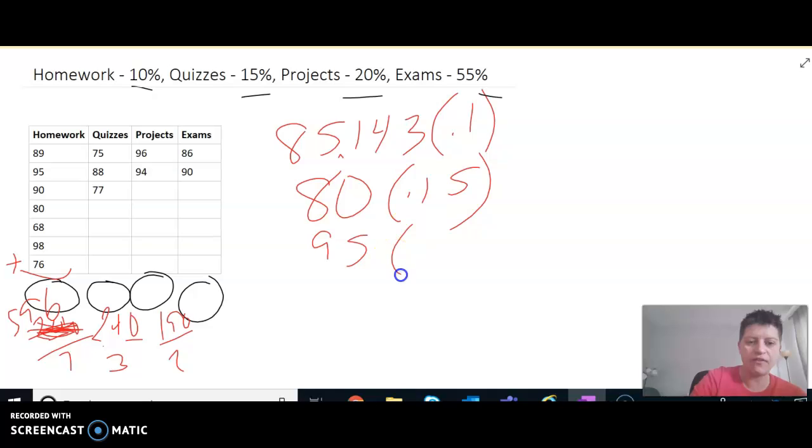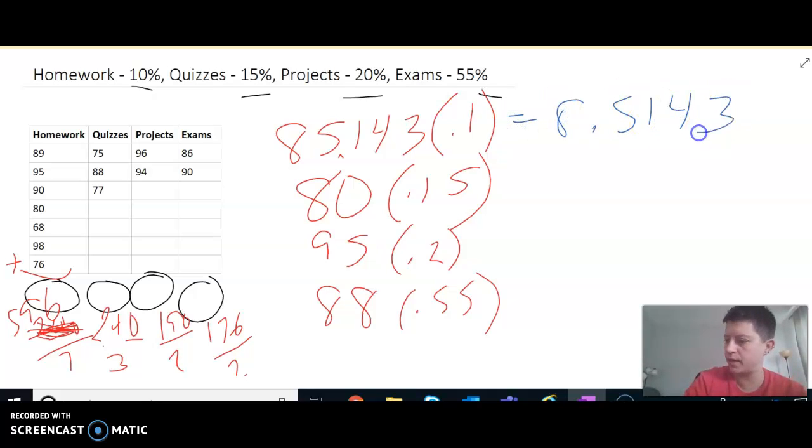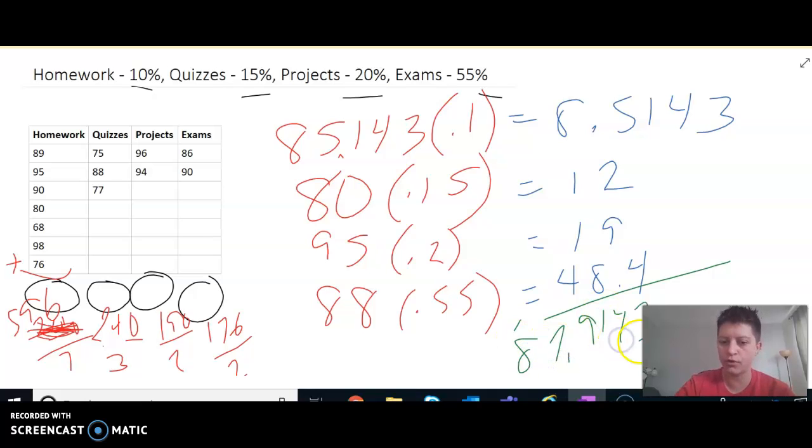The exam average is 176 divided by two, which is 88 at 55%. So you're taking category average, the average of each particular category multiplied by the accompanying weighted percentage. So when I multiply those, I get 8.5143, I get 12, 19, and 48.4. So simply to find our weighted average, we just add those four numbers together and we get 87.9143.